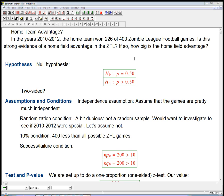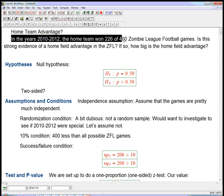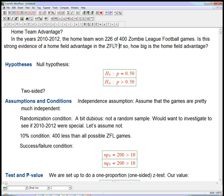Let's look at another problem involving hypothesis tests and confidence intervals, putting the two concepts together and looking at how they go together and what the small contrast between them is. This is based on a book problem, but I changed some identifying details and numbers. In the years 2010 to 2012, the home team won 226 of 400 zombie league football games. Notice that's more than 200. Is this strong evidence of a home field advantage in the ZFL? And if so, how big is the home field advantage?